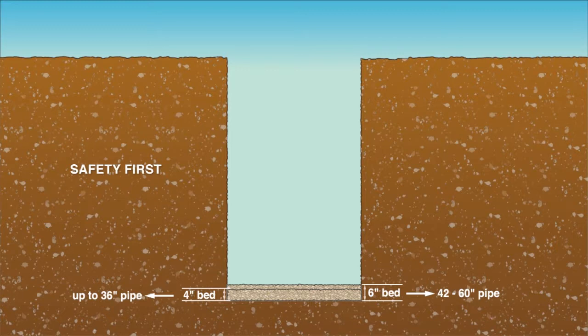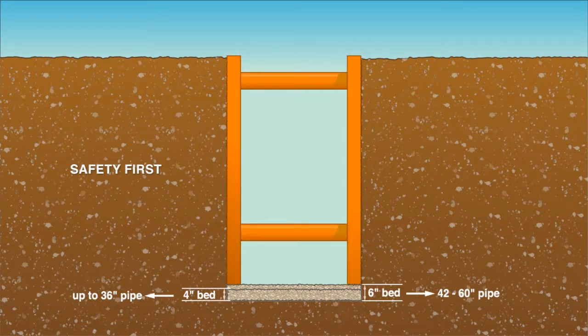Safety is the number one concern when installing dual wall pipe. While excavating, be certain trench walls remain stable and safe. Follow all local and national guidelines for maintaining a safe trench.